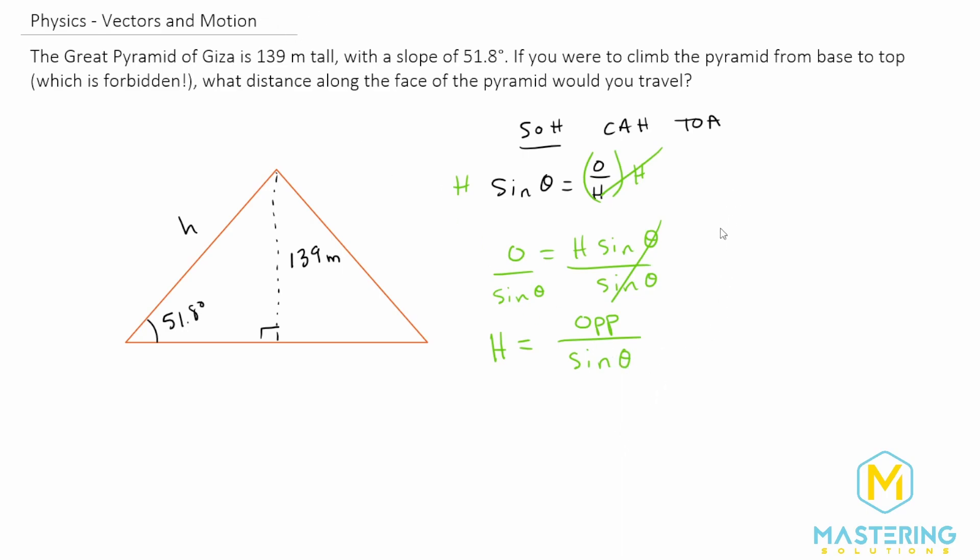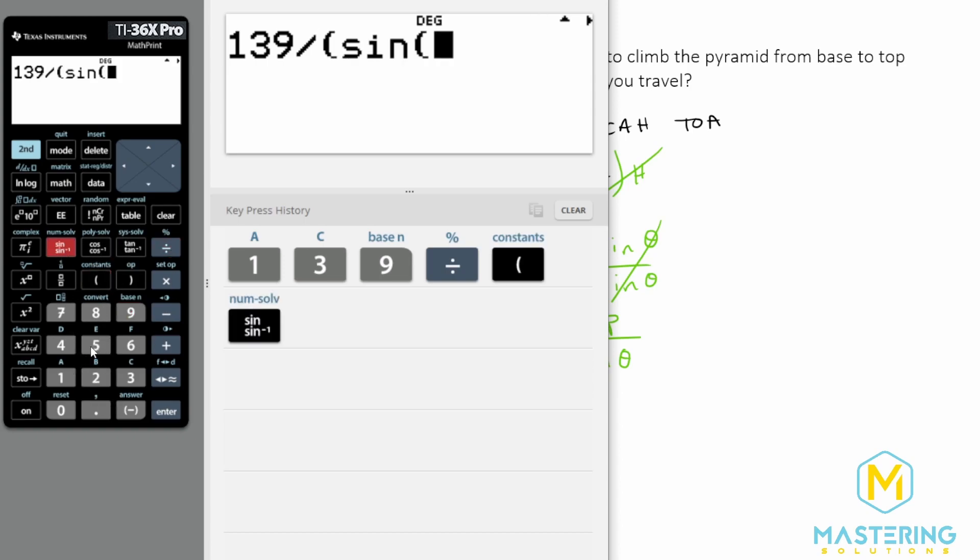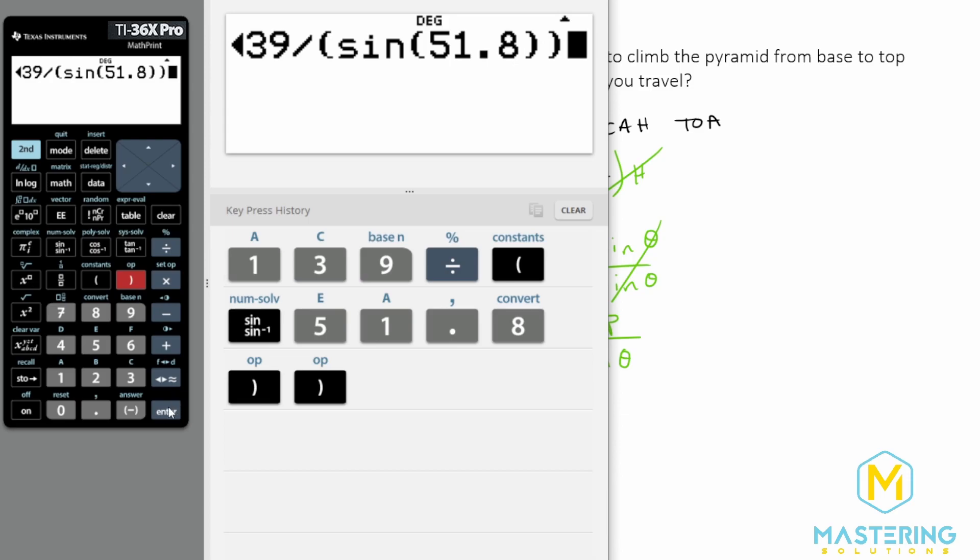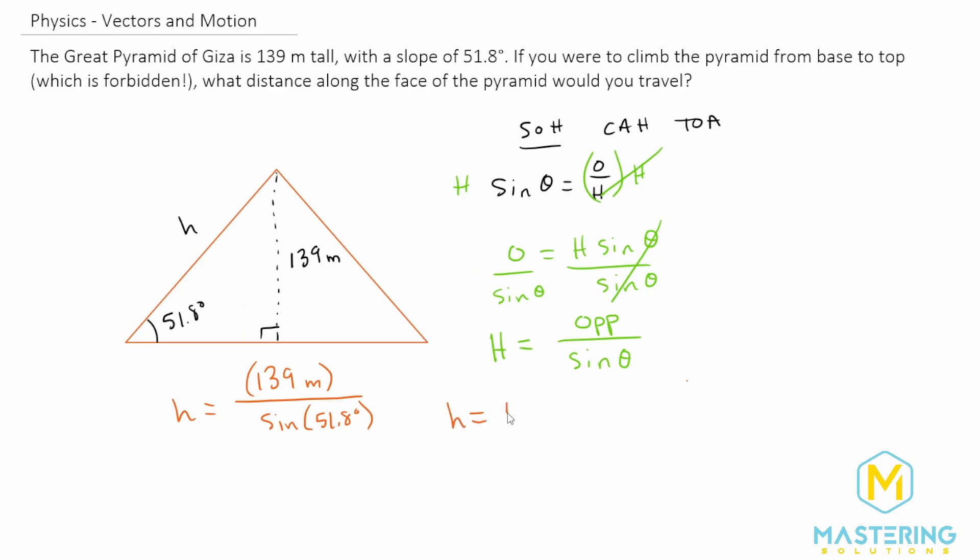So we can plug in our values. So H will be equal to 139 meters divided by sine of the angle, which is 51.8 degrees. So 139 divided by sine of 51.8 degrees gives us 176.8. So we'll round that to 177 meters is the distance that you would climb if you would climb up the face of the pyramid, which they make explicit is forbidden.